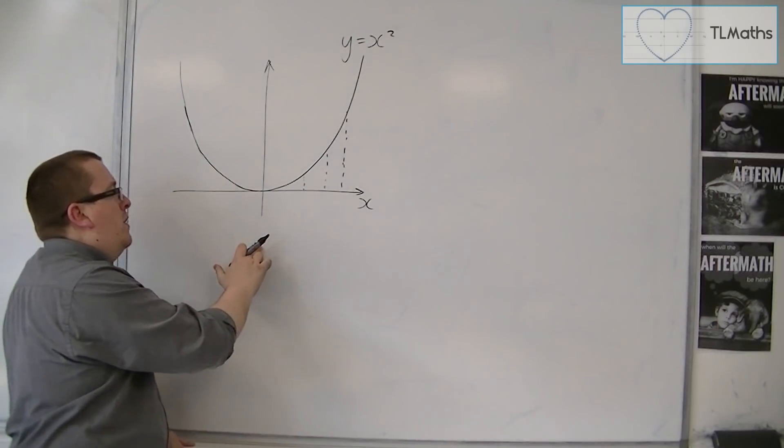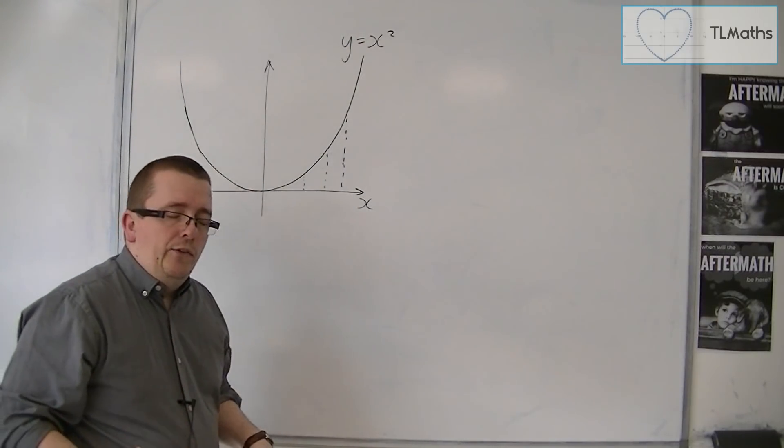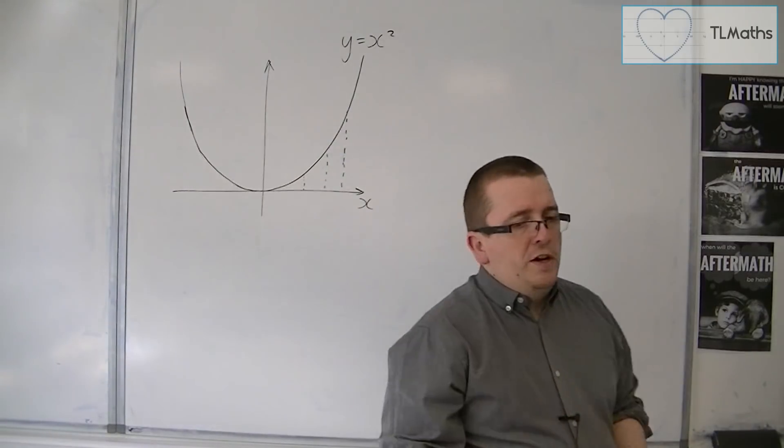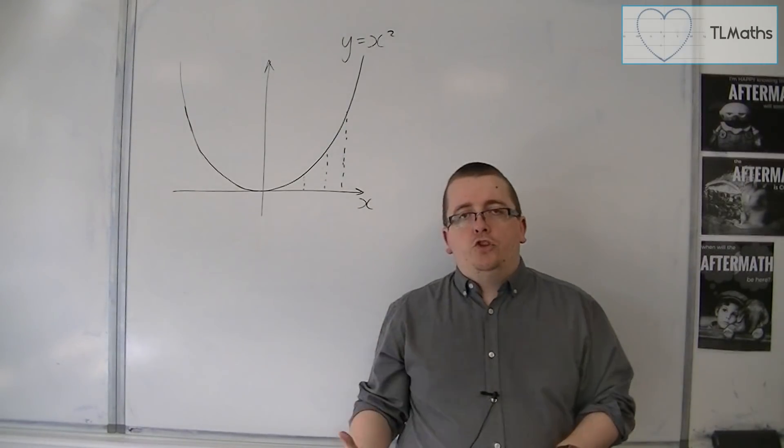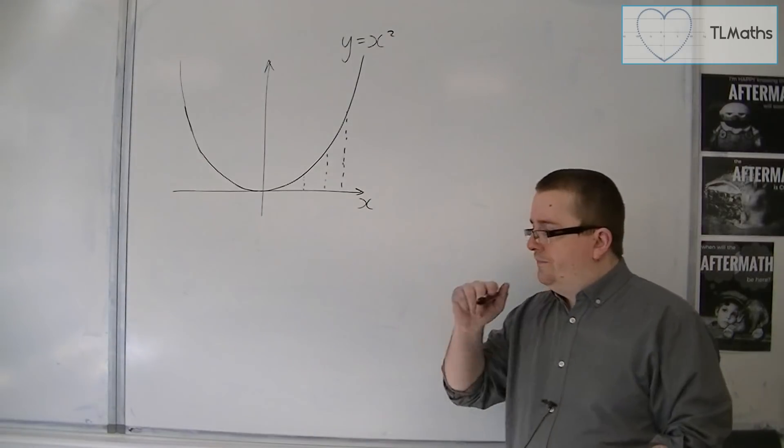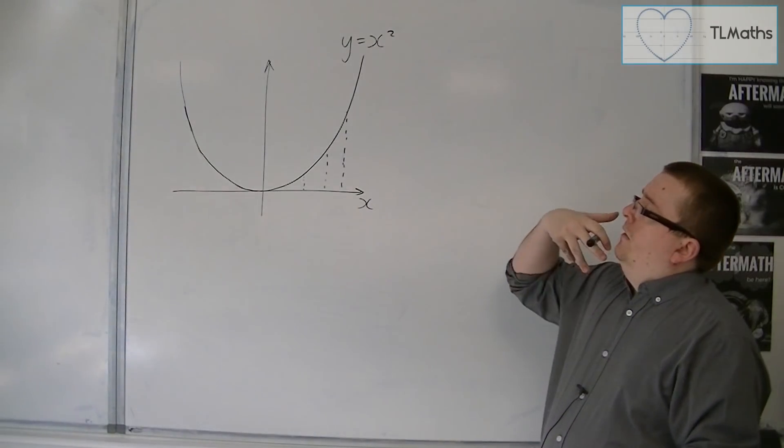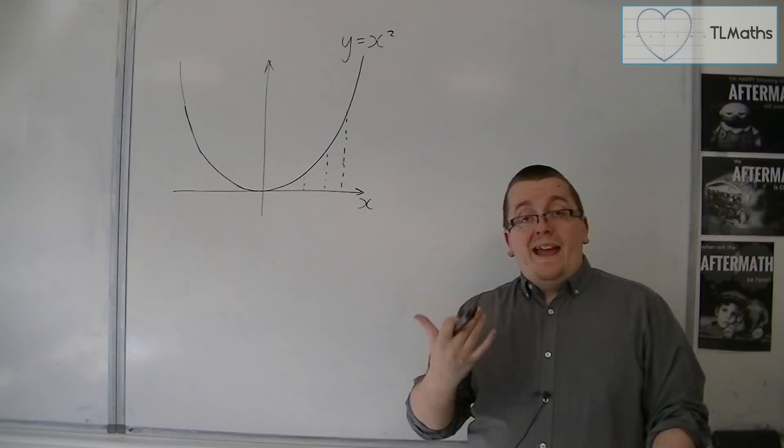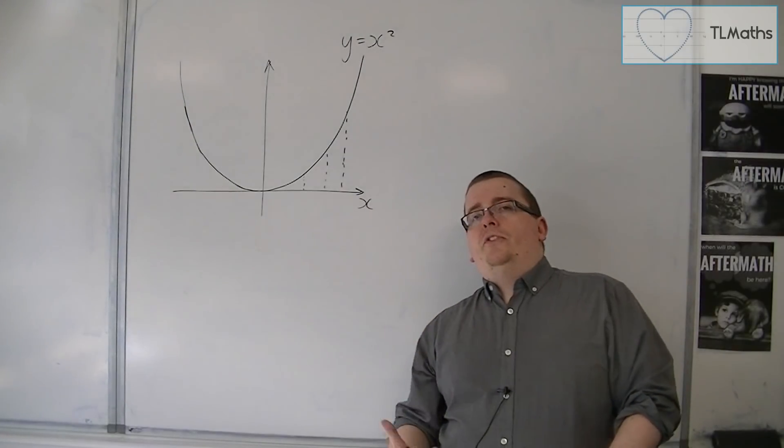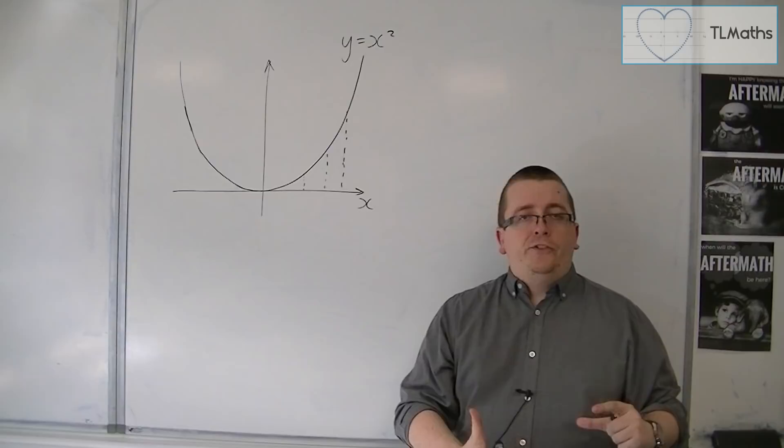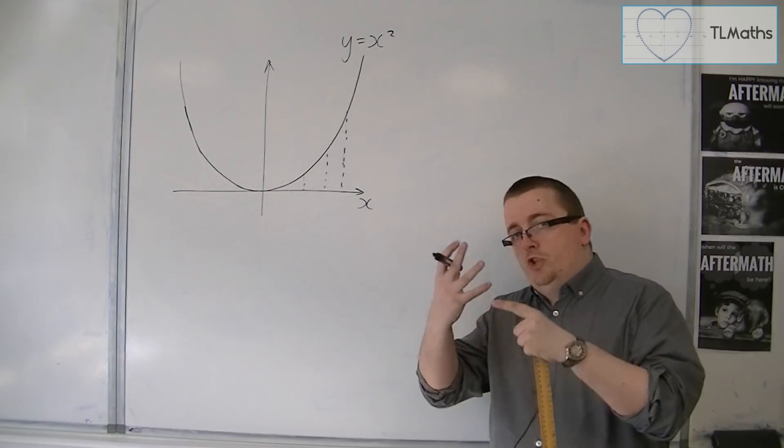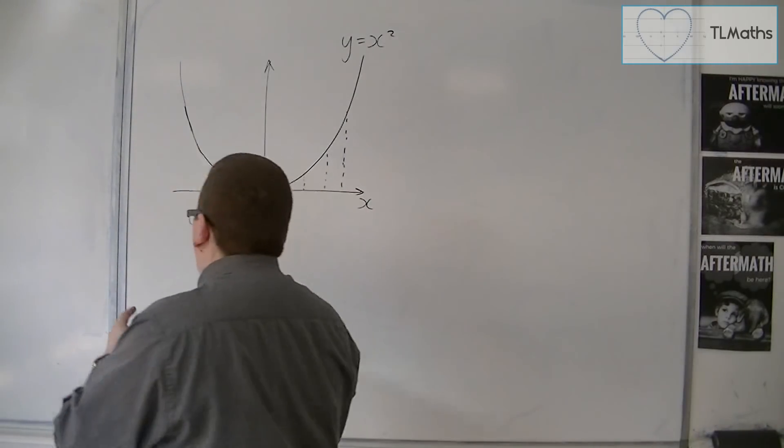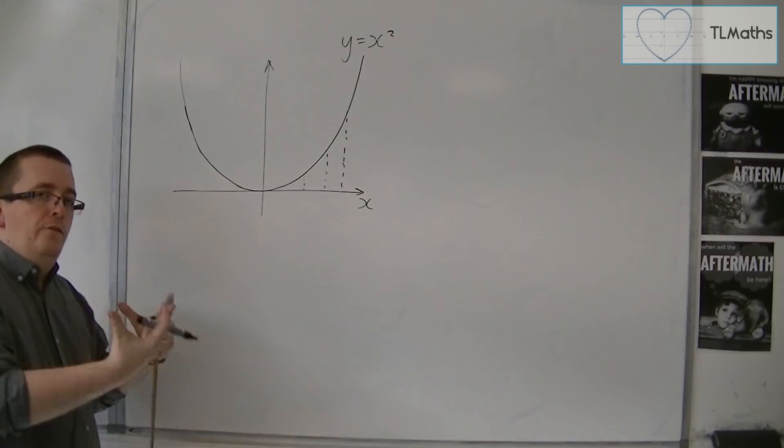So when we write down dy by dx, what we will refer to as the gradient function or the rate of change, this will have to involve an x, because the gradient is changing with regards to x. And it's being changed by the fact that there is this x inside the formula.